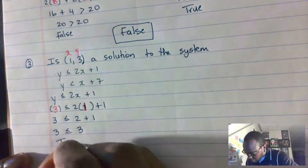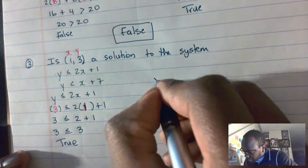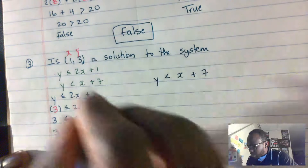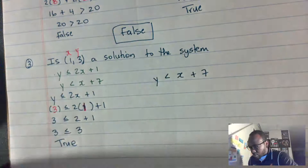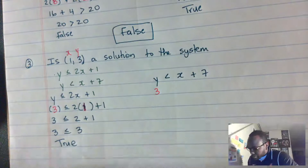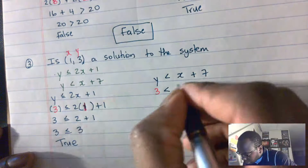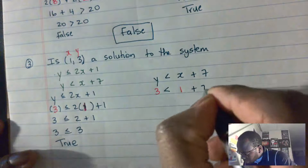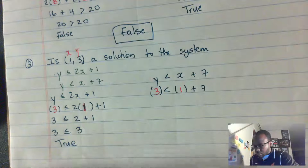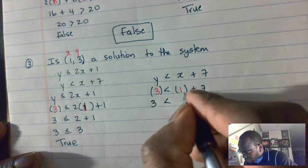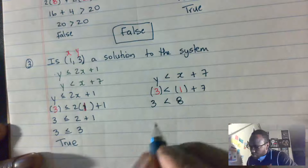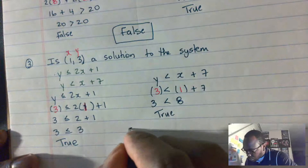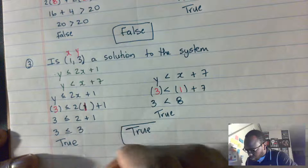Now for the second inequality: y < x + 7. We know y is 3, so: 3 < 1 + 7. That gives us 3 < 8. Is 3 less than 8? Yes — so this is a true statement. Both inequalities are true, so the answer for this example is indeed true.